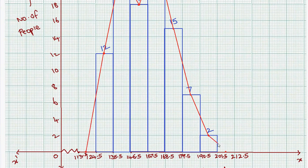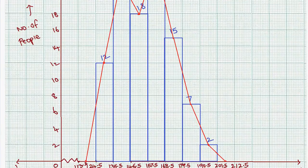This completes the construction of the frequency polygon. The polygon is drawn by connecting the midpoints of the tops of each histogram bar, forming a closed polygon. The frequency polygon graph is now complete.